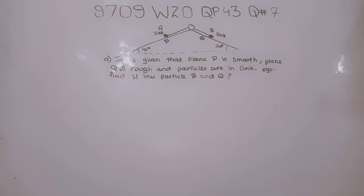In the diagram, particles A and B have masses 2 kg and 3 kg respectively and are attached to the ends of a light inextensible string. The string passes over a small fixed pulley attached to the top of two inclined planes. Particle A is on plane P and particle B is on plane Q which is inclined at 20 degrees to the horizontal.